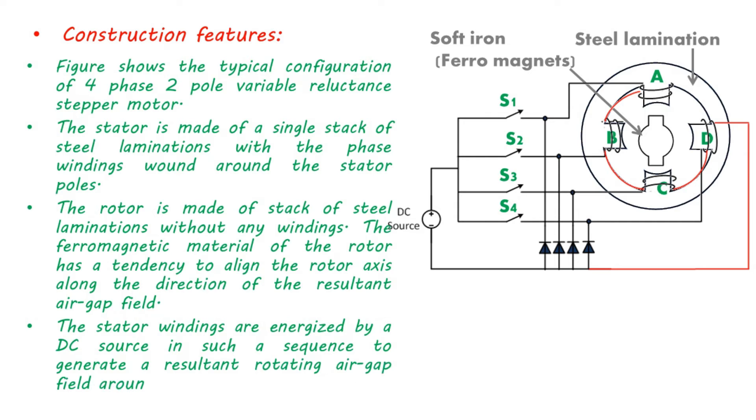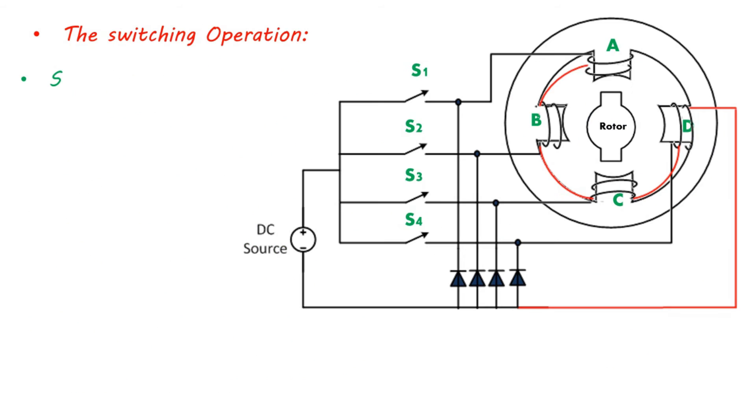The neutral is also brought out and connected to negative terminal of DC source. The sequence of switching is A, B, C, D, and then again A in case of full step control.